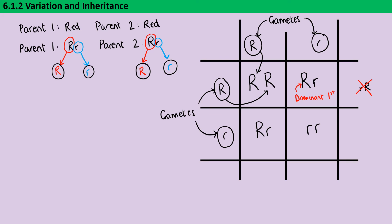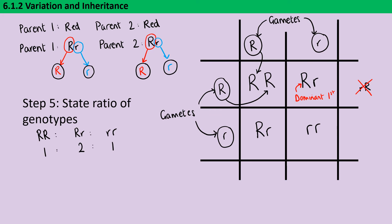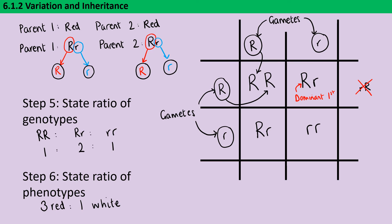I can now fill in the other two boxes to give four genotypes in my Punnett square. Step five is to work out the ratio of those genotypes: one homozygous dominant to two heterozygous to one homozygous recessive — write that down on your exam paper even if it hasn't been asked for. Step six is to state the ratio of phenotypes, which here is three red to one white. Label these on your genetic diagram so it's very clear to your examiner that you know what they are.